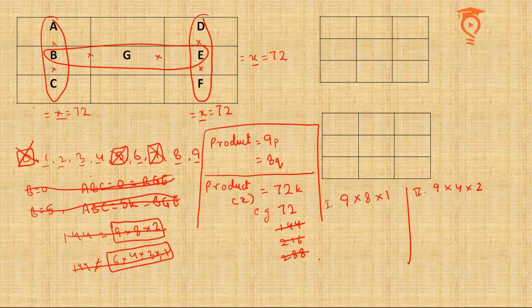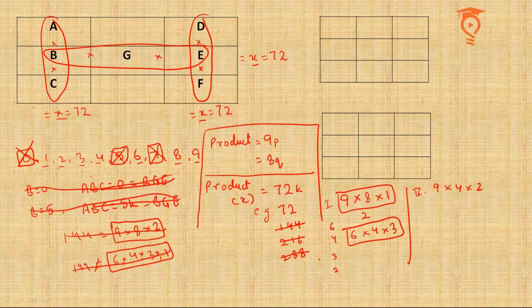If 9, 8, 1 make one product, the remaining digits, that is 6, 4, 3, and 2, can make another product. Let's try to make them. 9, 8, 1 will make 72. 6, 4, 3 will make 72.